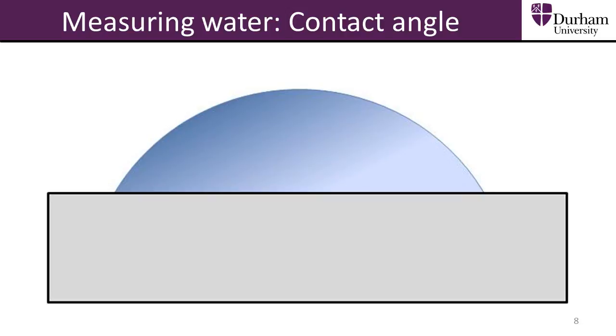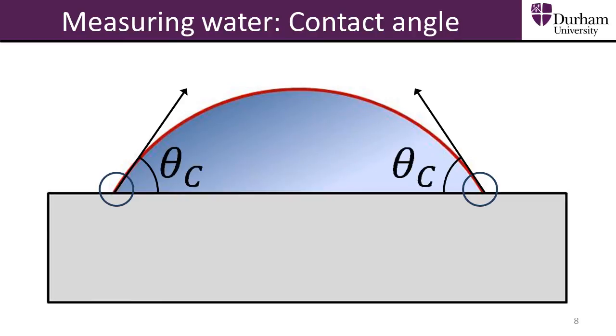If we look at a droplet sat on a surface from side on, we can see that the top edge of the droplet forms a curve. At the point where the top edge meets the surface, we can draw a straight line from the surface, so that the line just touches the edge of the droplet. This line is known as a tangent to the drop. The contact angle is the angle between the surface and the tangent that we have just drawn.